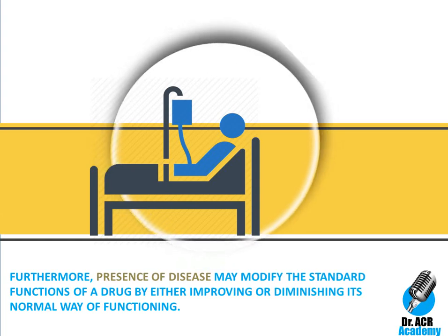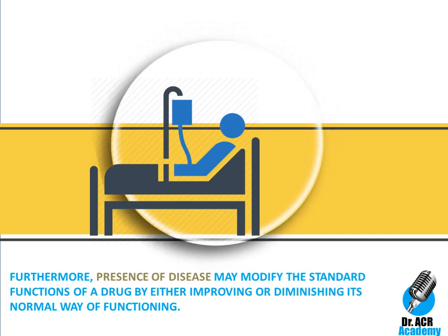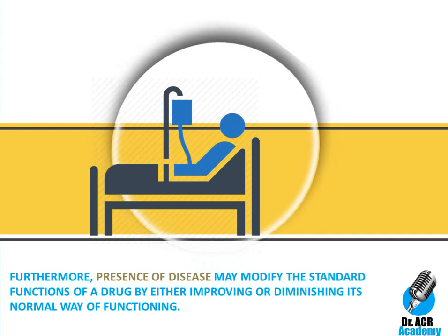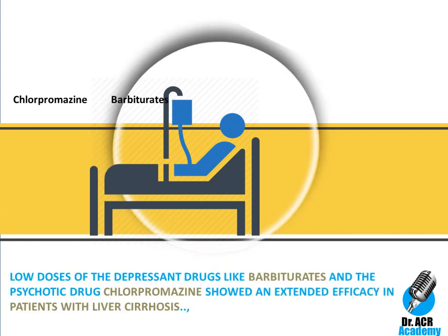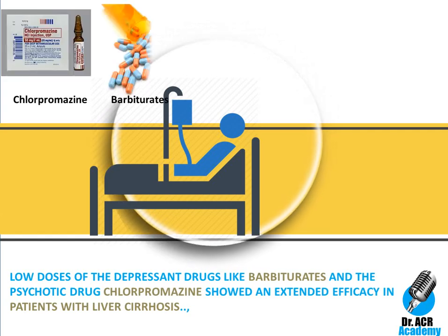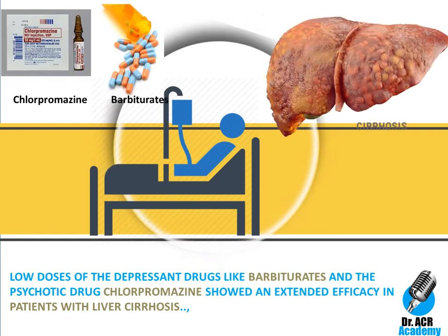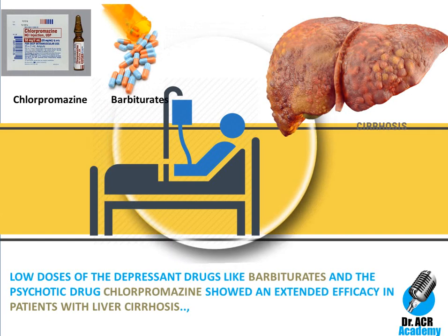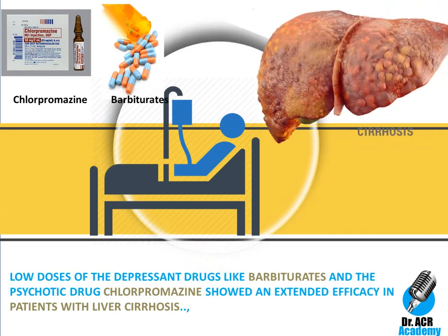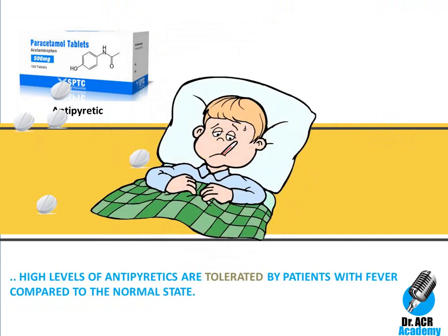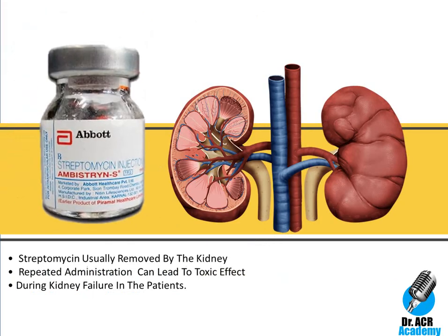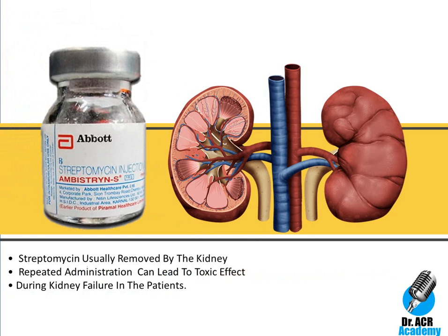The presence of disease may modify the standard functions of a drug by either improving or diminishing its normal functioning. Low doses of depressant drugs like barbiturates and the antipsychotic drug chlorpromazine showed extended efficacy in patients with liver cirrhosis. High levels of antipyretics are tolerated by patients with fever compared to the normal state. Streptomycin is usually removed by the kidney, and repeated administration can lead to toxic effects during kidney failure.